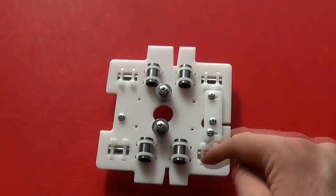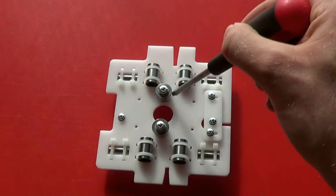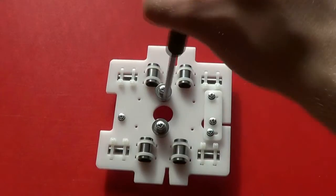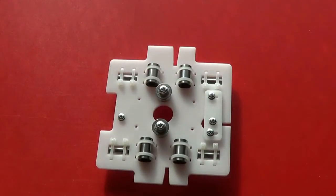So these will allow the Y-belt to snake around the motor pulley, which is going to be in the middle there. Okay, we're finished.